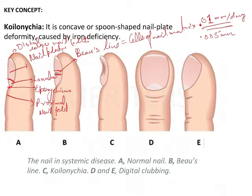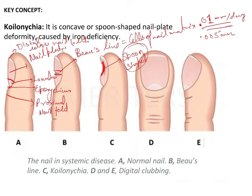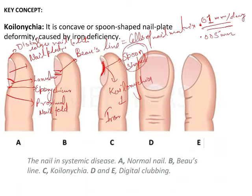Then there are certain concavities which are seen in the nails, and these concavities make the shape spoon-shaped. So you will have spoon-shaped nails. These spoon-shaped nails are seen in a lot of conditions, and this particular sign is known as koilonychia. If we particularly talk about the deficiency, it generally occurs in the iron deficiency condition.